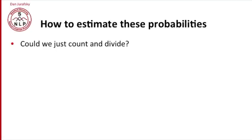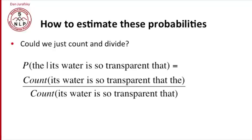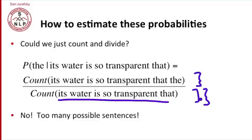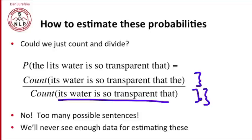How are we going to compute these probabilities? Could we just count and divide? We often compute probabilities by counting and dividing. So the probability of the given its water is so transparent that we could just count how many times its water is so transparent that the occurs and divide by the number of times its water is so transparent occurs. We can't do that. And the reason we can't do that is there's just far too many possible sentences for us to ever estimate these. There's no way we can get enough data to see the counts of all possible sentences of English.